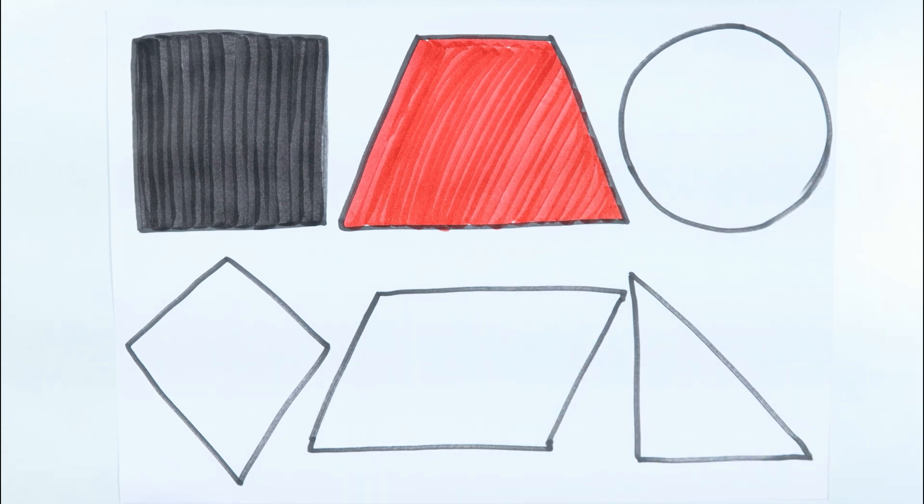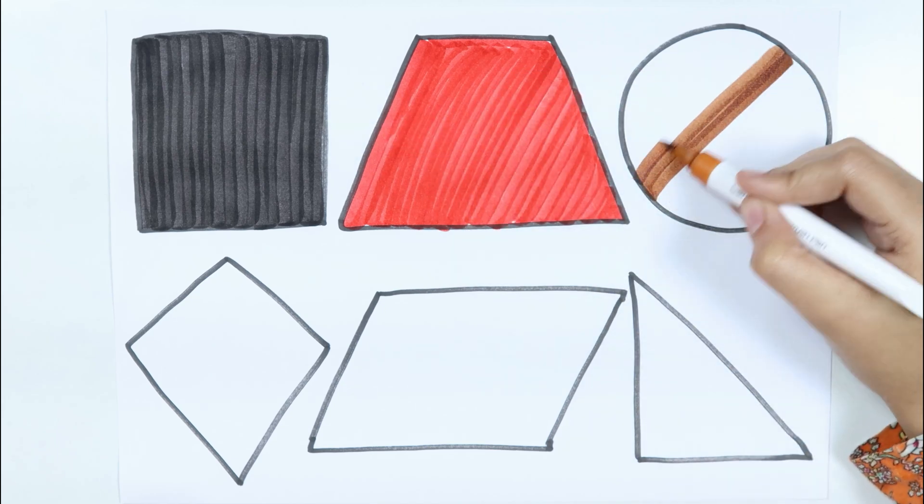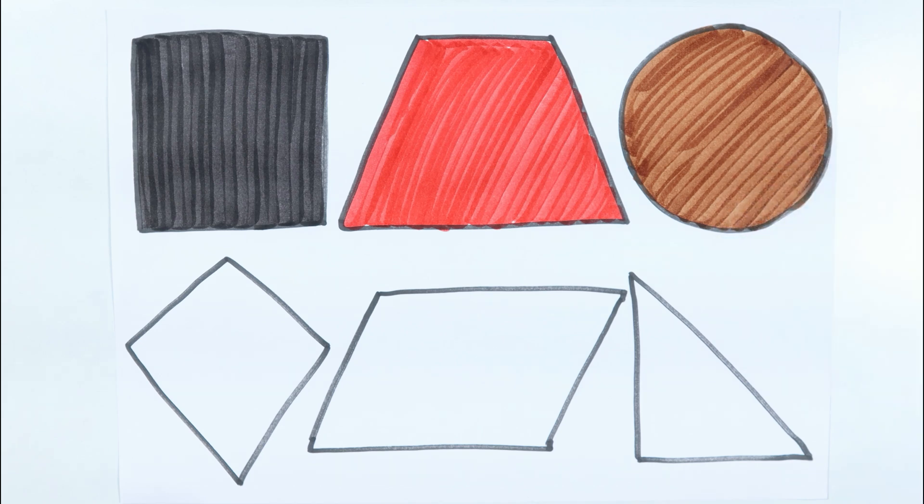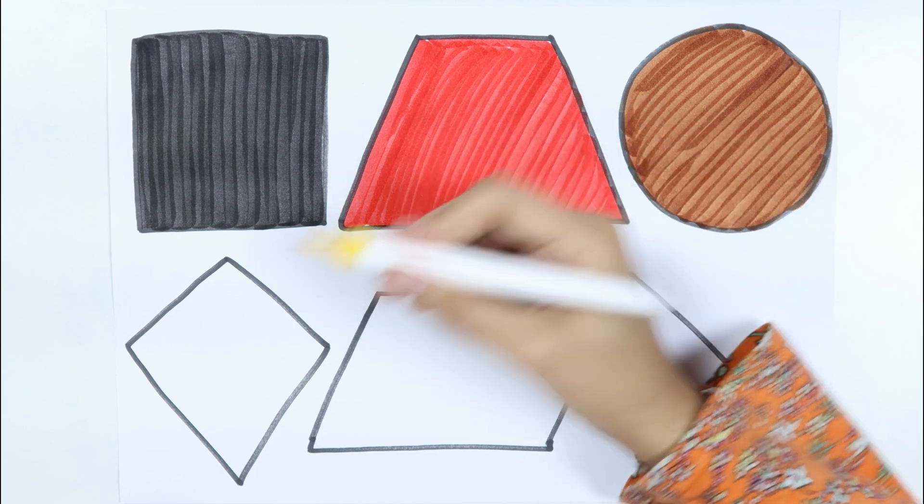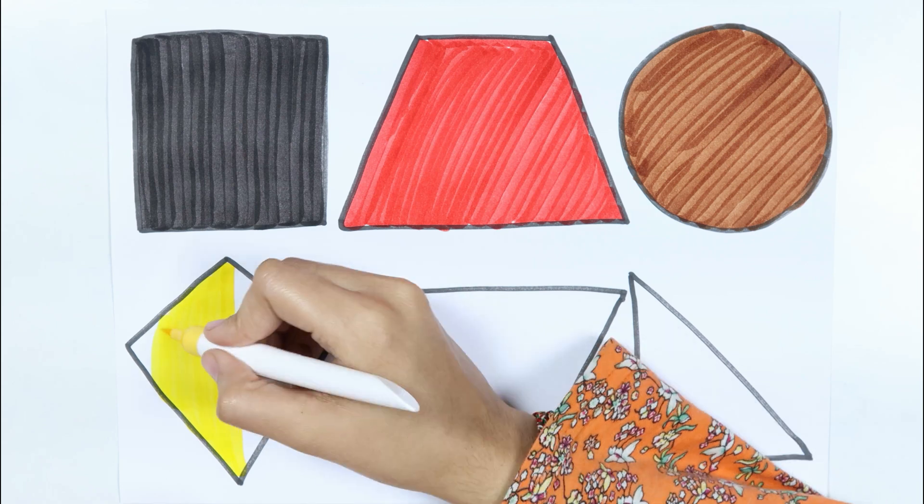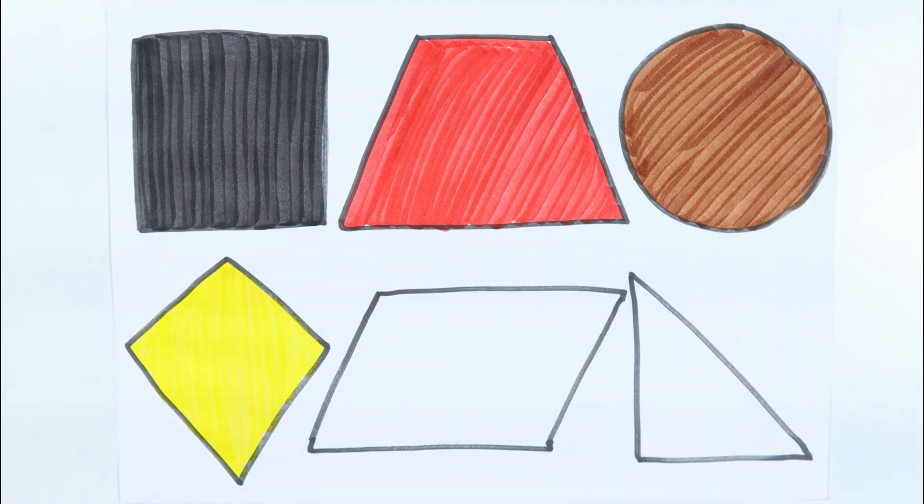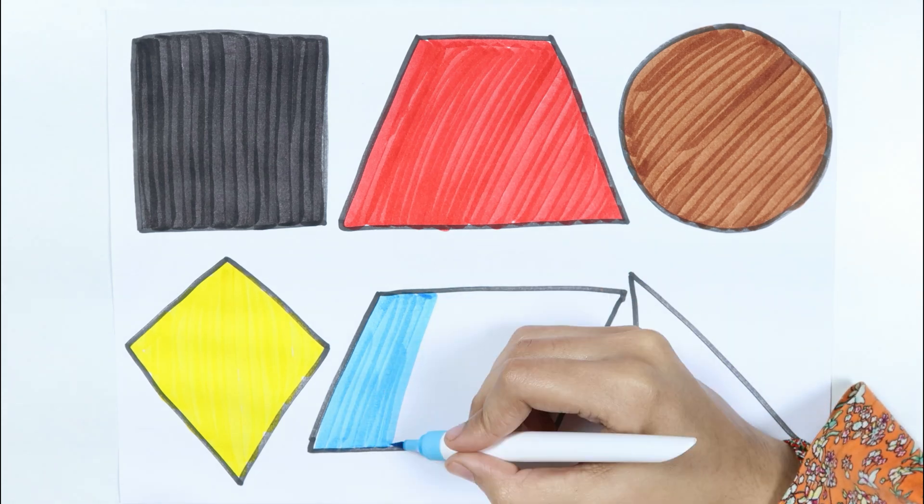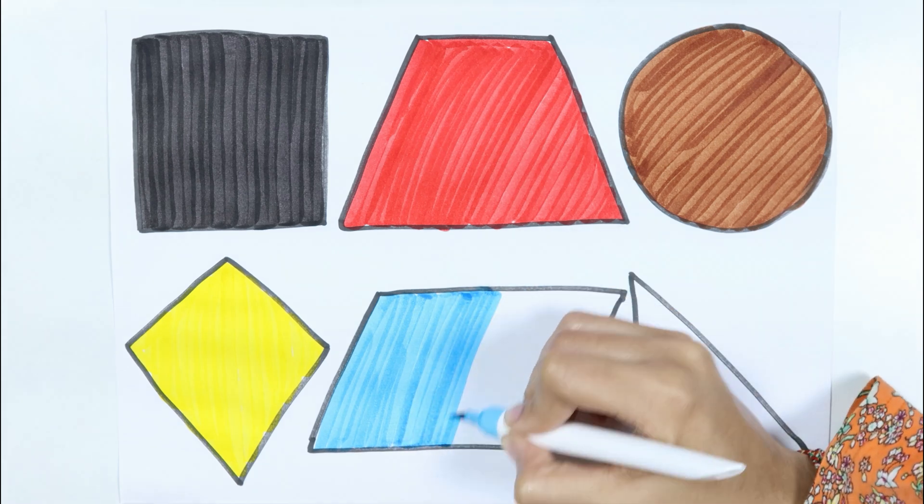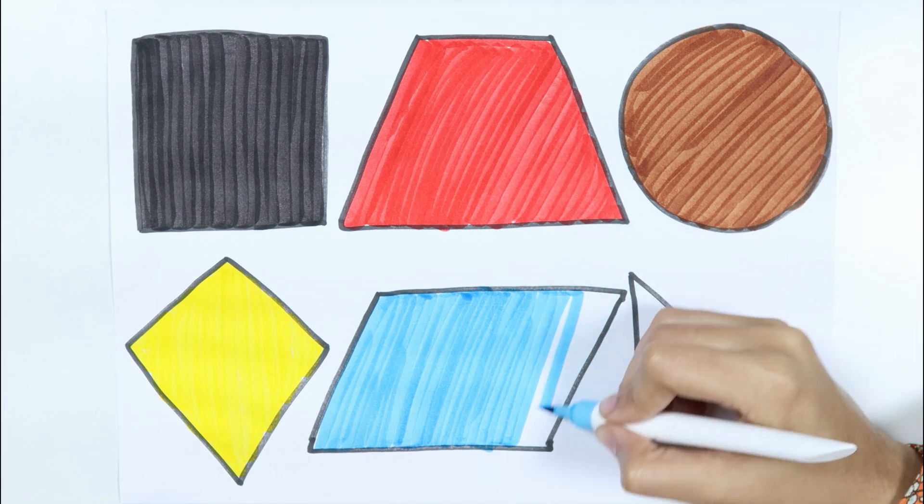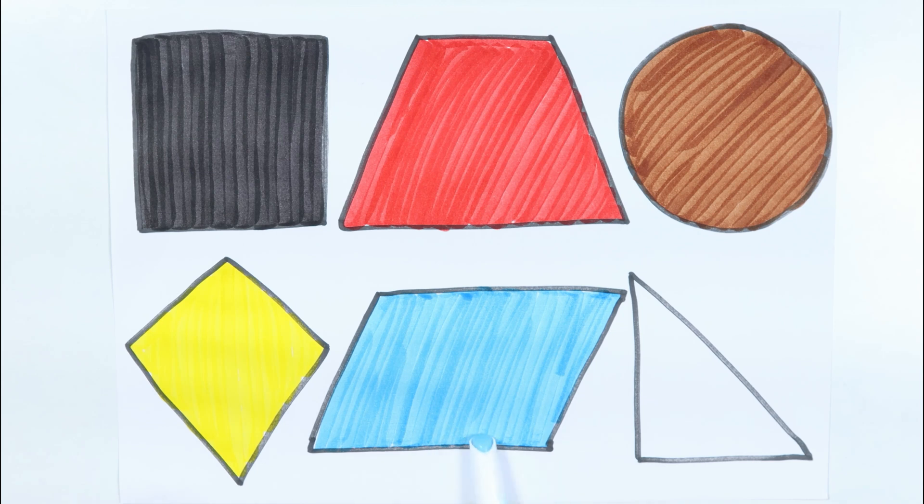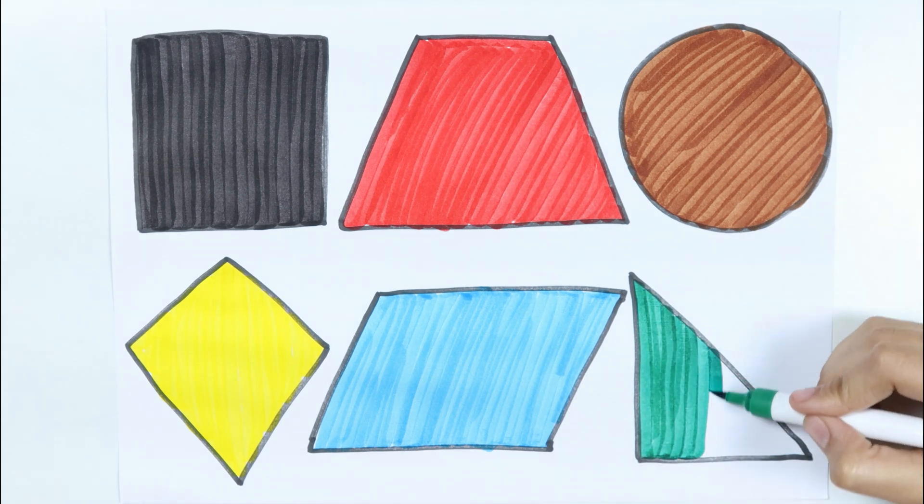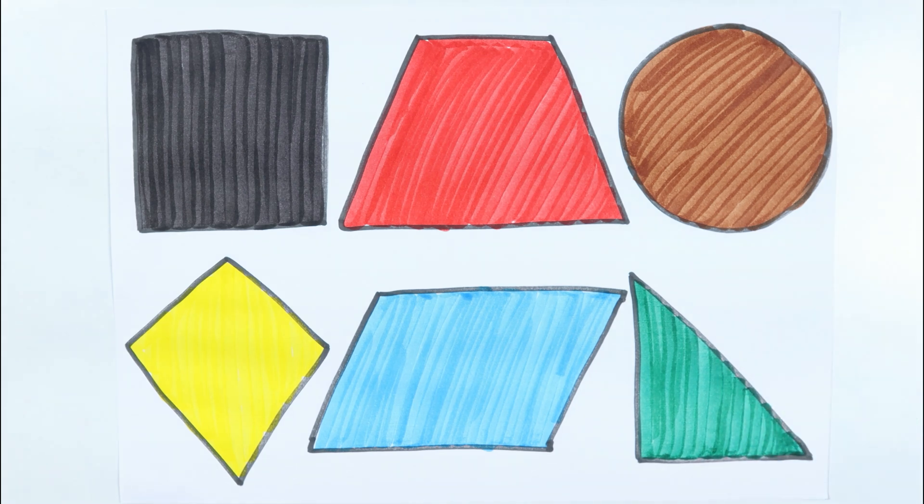Trapezoid, brown color. Circle, yellow color. Sky blue color. Parallelogram, dark green color. Light green color.